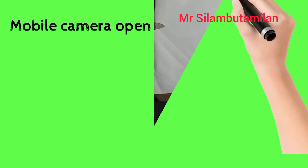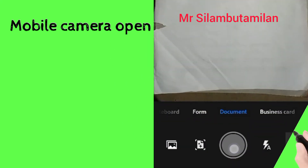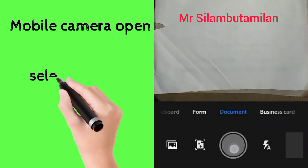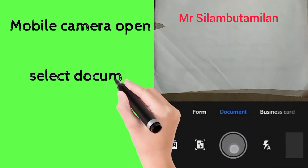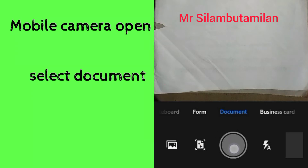You can open the mobile camera. You can add the document. Click on the round button to start the PDF scan.